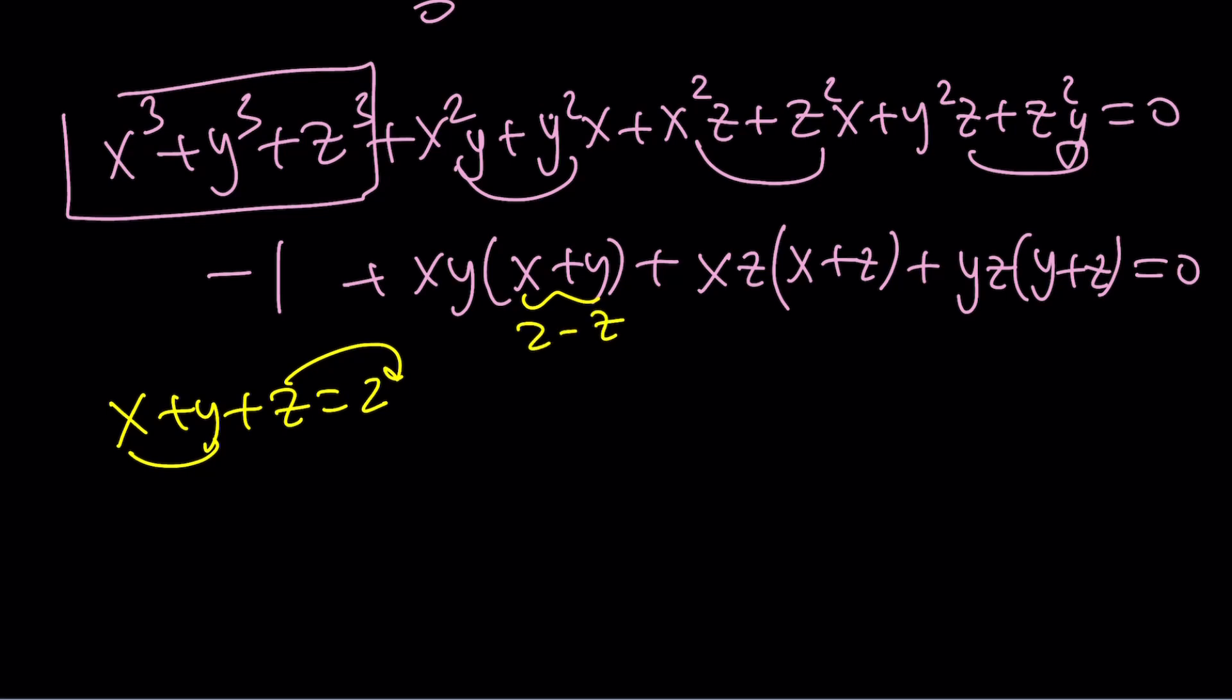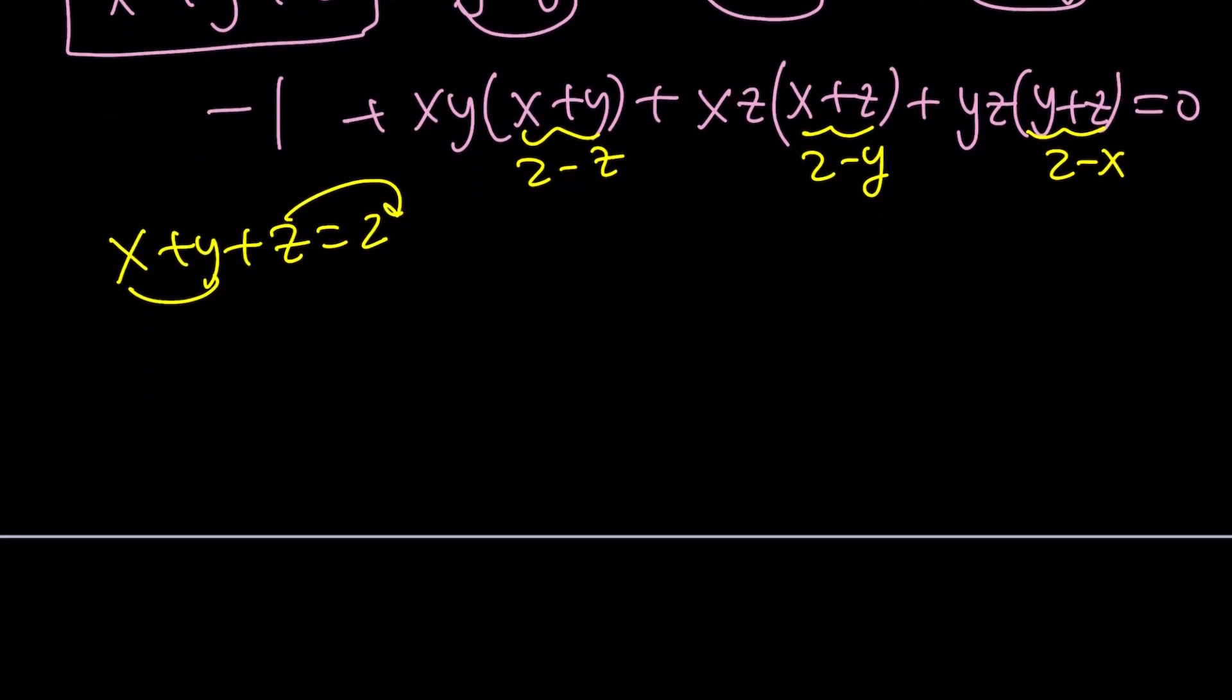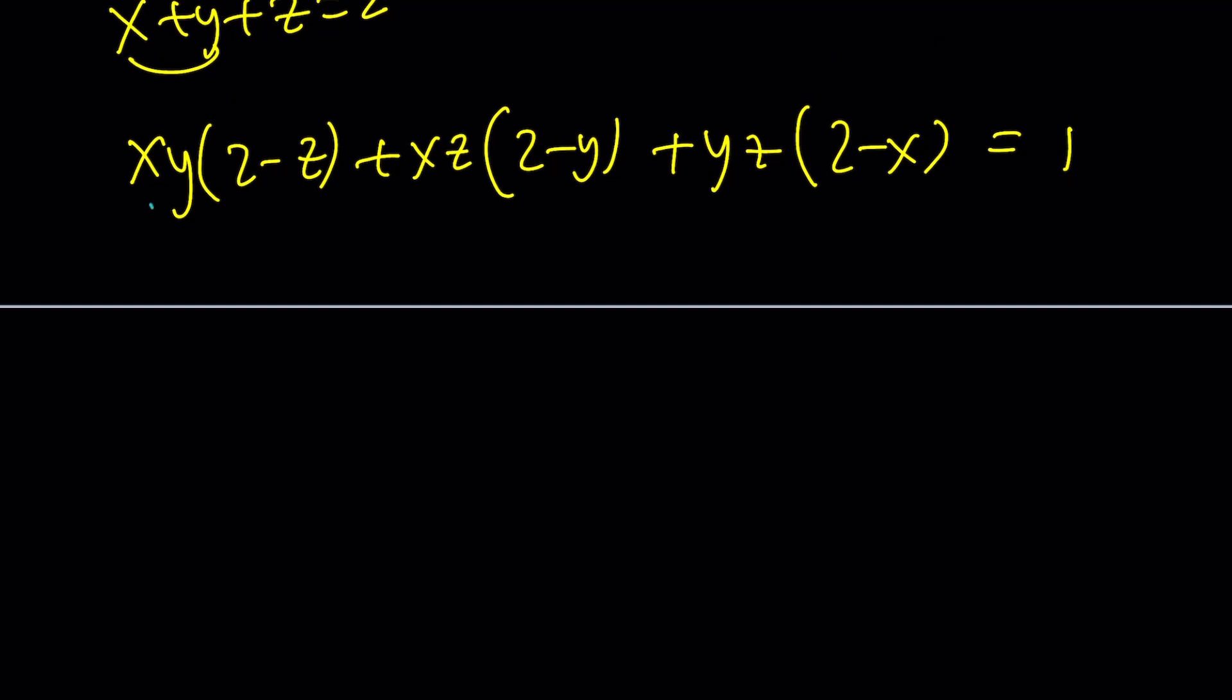Great. This can be written as 2 - y. And this can be written as 2 - x. Let's go ahead and distribute. Now, we know that this is equal to xy(2 - z) + xz(2 - y) + yz(2 - x). And that's equal to 1 because -1 plus that equals 0. Right? Now, how do we work this out? Easy. Look at this. 2xy, 2xz, 2yz. So, 2(xy + xz + yz). This is why I love algebra because it's just amazing.